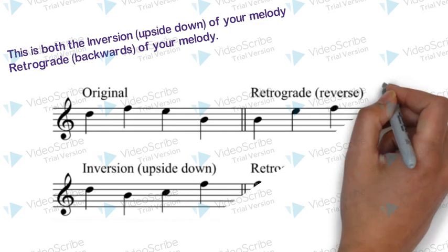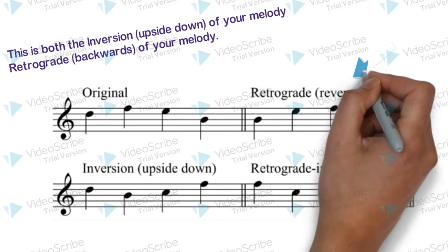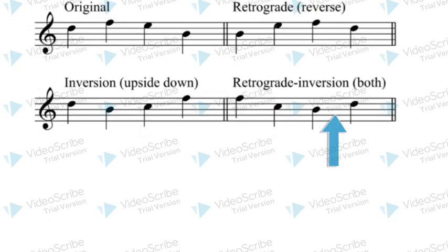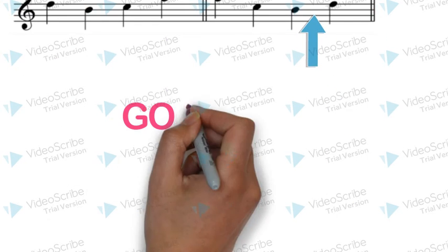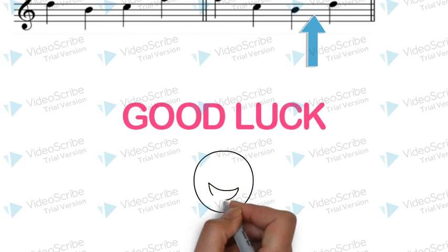The easiest way to do this is to write the melody as a retrograde inversion first, and then invert it and turn it upside down. Try retrograde inversion with your melody and see how different it sounds. Good luck!